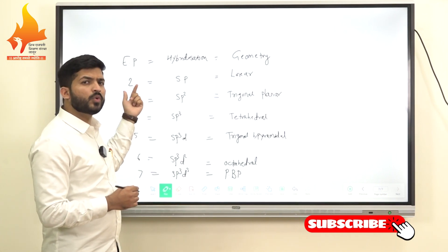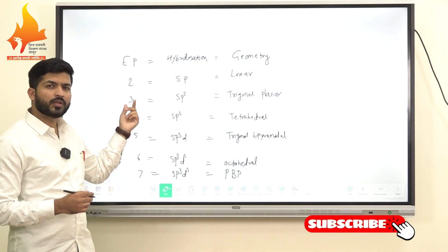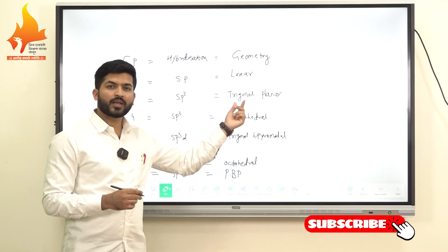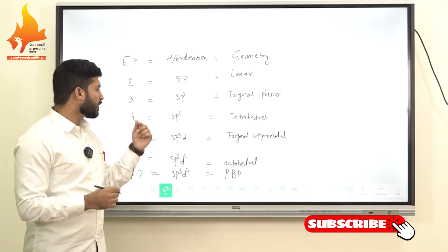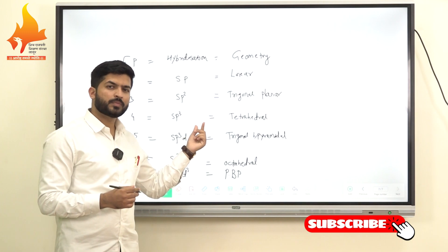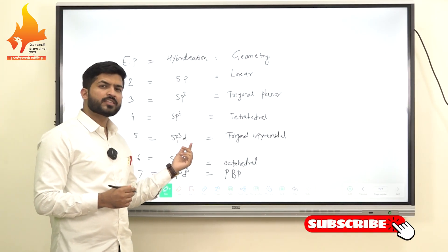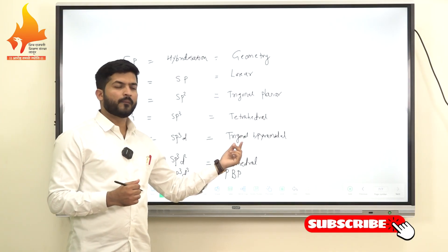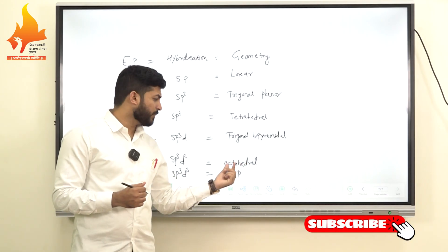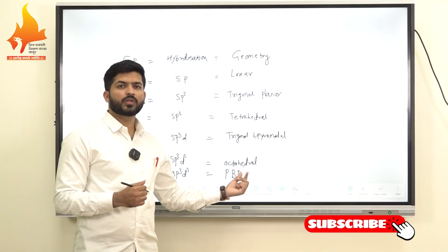If the total number of electron pairs are 2, hybridization is sp and geometry is linear. If 3, hybridization is sp2 and geometry is trigonal planar. If 4, hybridization is sp3 and geometry is tetrahedral. If 5, hybridization is sp3d and geometry is trigonal bipyramidal. If 6, hybridization is sp3d2 and geometry is octahedral. If 7, hybridization is sp3d3 and geometry is pentagonal bipyramidal.